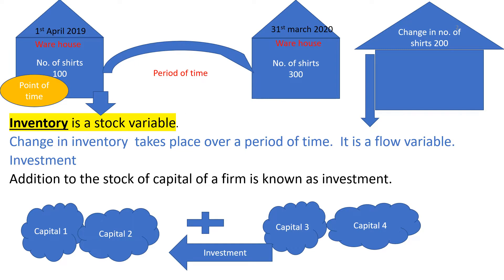Before we take up the main concept, first let us understand what is inventory. Inventory is nothing but a physical stock of raw material, semi-finished goods, or finished goods maintained by firms for smooth functioning of their economic activities. We call inventory a stock variable as it is measured at a point of time.